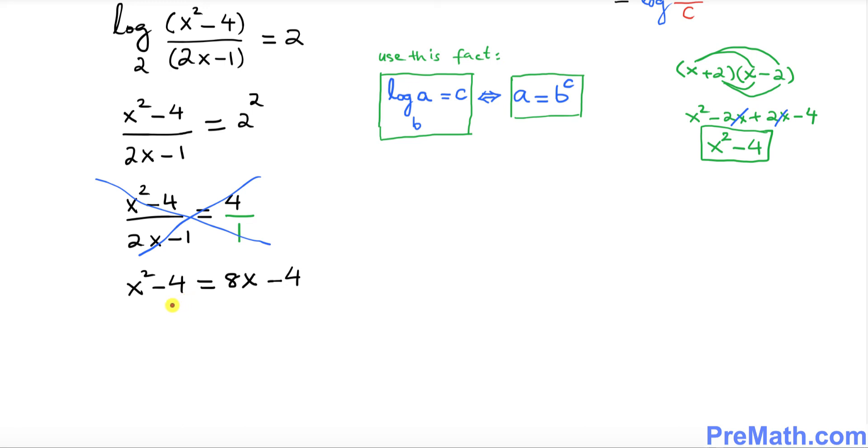Now we want to solve for X. Let's see if you add positive 4 on both sides, this negative 4 is gone. We ended up with X squared equals to 8X.